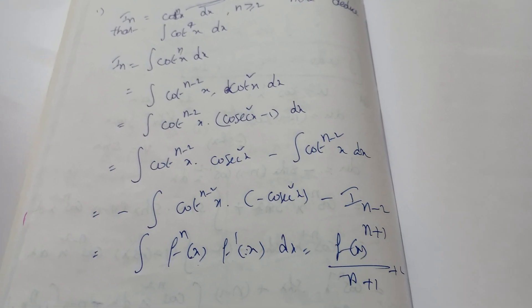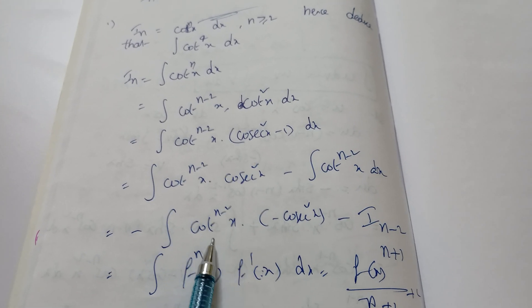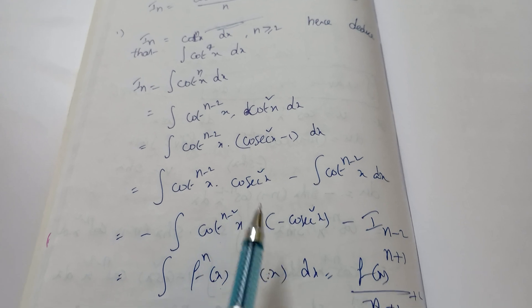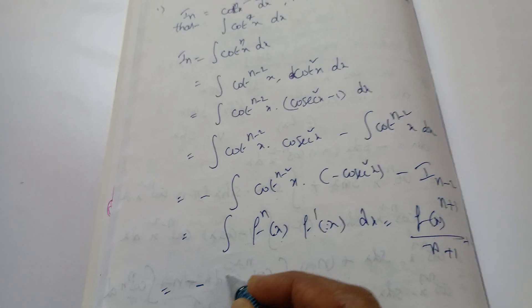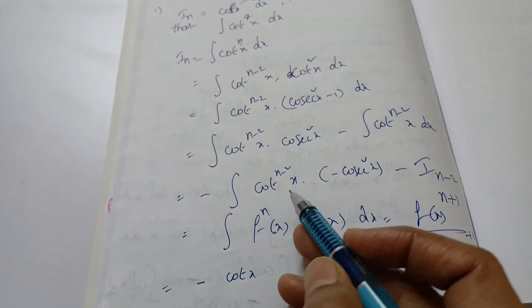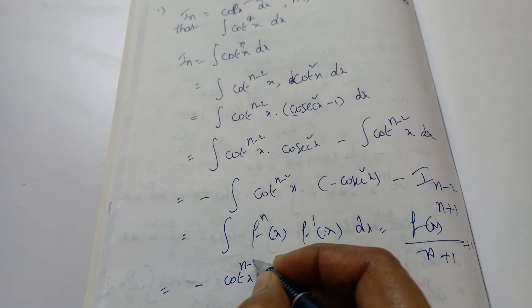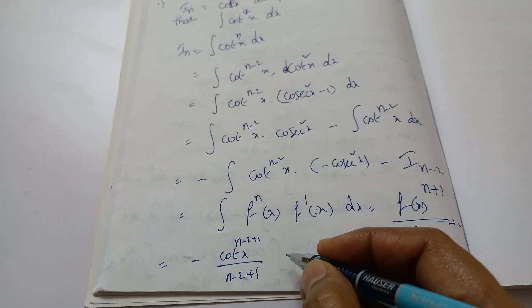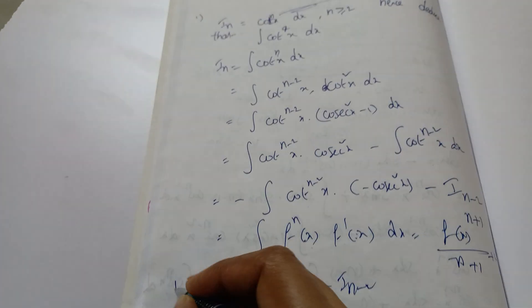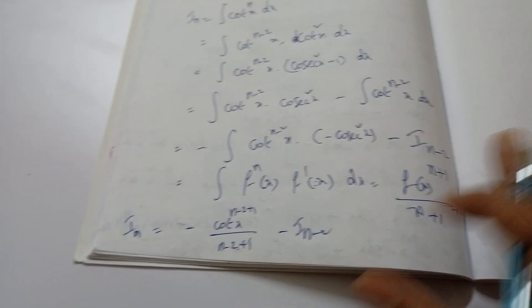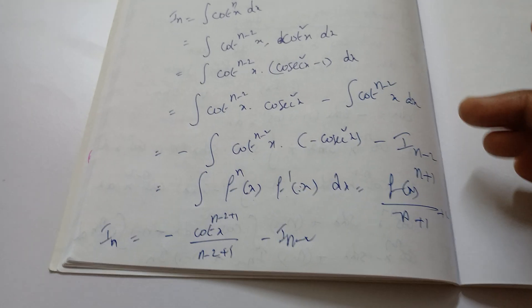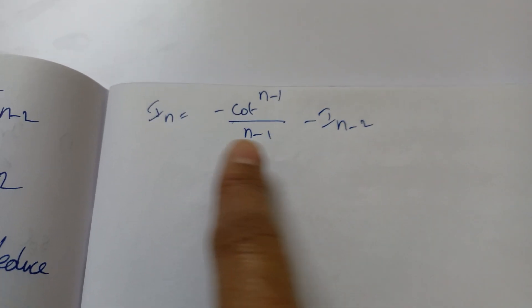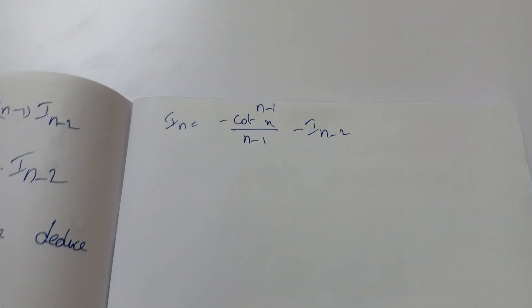Applying the formula: ∫cot^(n−2) x · (−cosec²x) dx = cot^(n−2+1) x / (n−2+1) = cot^(n−1) x / (n−1). With the minus sign and subtracting I_(n−2), the reduction formula is: I_n = −cot^(n−1) x / (n−1) − I_(n−2).